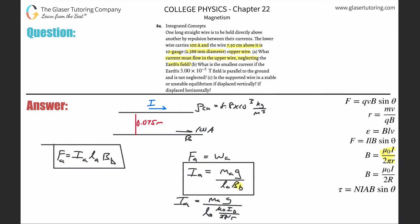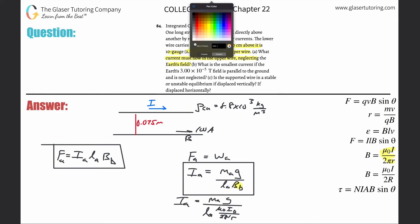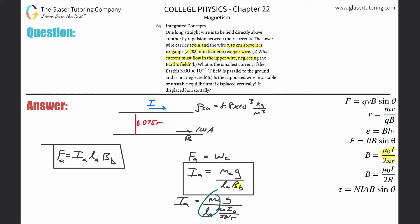Mass and length are still unknown. So I need to think about how mass and length are related — and that's through density. Density equals mass divided by volume. The wire is a cylinder, so volume equals π r² times the length. If I rearrange, I get mass per length equals π r² times density. So mass per length of wire A equals π times the radius of wire A squared times the density. They told us the diameter, so we can find the radius.